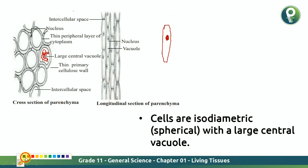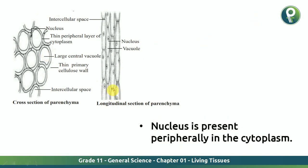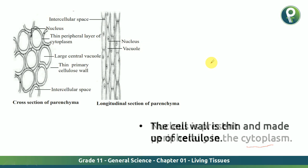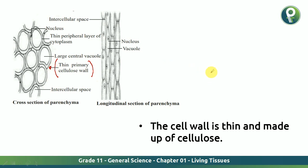We will talk about that dot in the next slide. The nucleus is present — that dot is what you call the nucleus. The nucleus is present peripherally in the cytoplasm. The cell wall is thin and made up of cellulose — thin primary cellulose walls. So we have identified the nucleus, the vacuole, and the thin primary cellulose wall.